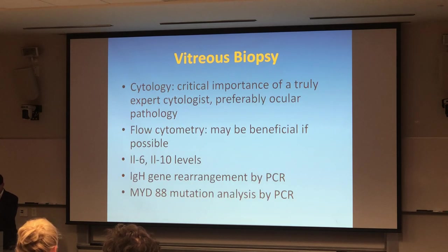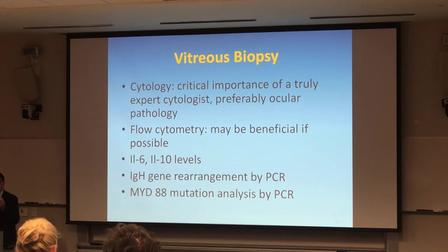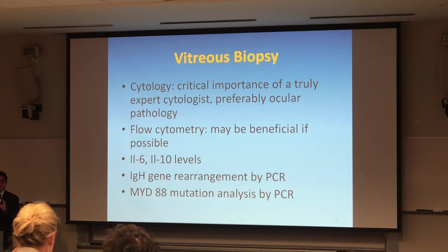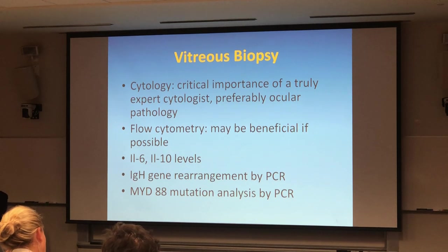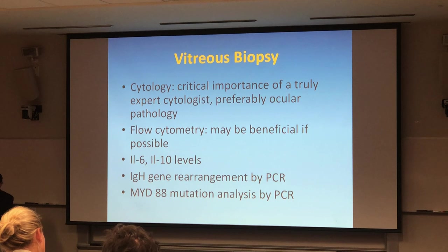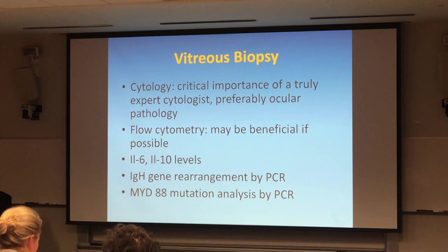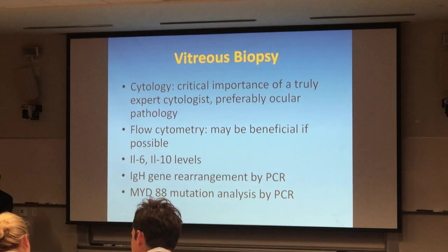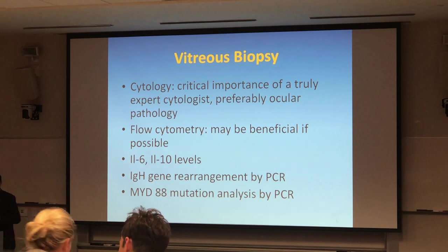Cytology is very important — both flow cytometry and cytopathology. We also look at IL-6 and IL-10 levels. IgH gene rearrangement is very important. Recently, work on MYD88 mutation by the group at Proctor is also important. When we remove a specimen at Stanford, one of the things I check is MYD88 mutation. None of these is 100% proof — you cannot rely on just one marker. You must do multiple things together.